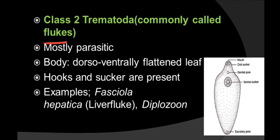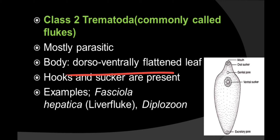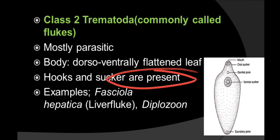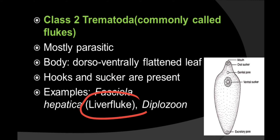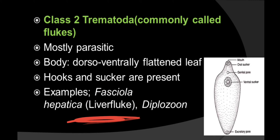The next class is Trematoda, commonly called flukes. The animals here are mostly parasitic and the body is dorsoventrally flattened, leaf-like. Hooks and suckers are present because they are parasitic. Some examples are Fasciola hepatica, also known as liver fluke, which was discussed in the previous lesson, and Diplozoon. These are examples of the class Trematoda.